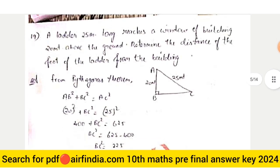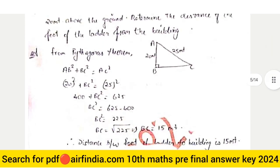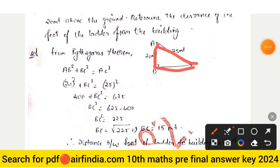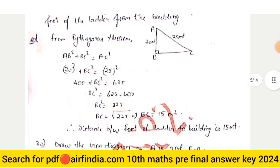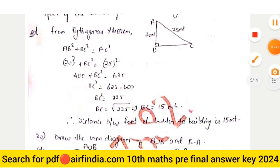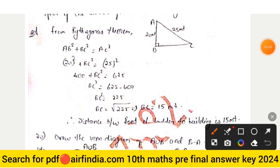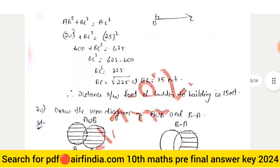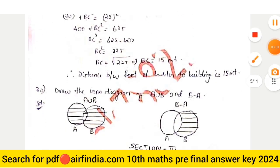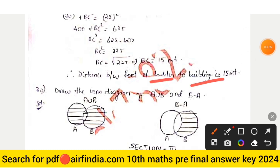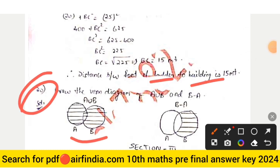Question number nineteen: using the Pythagoras theorem — AB² + BC² = AC² — so 20² + BC² = 25², giving BC = 15 meters. The distance between the foot of the pole and the building is 15 meters.